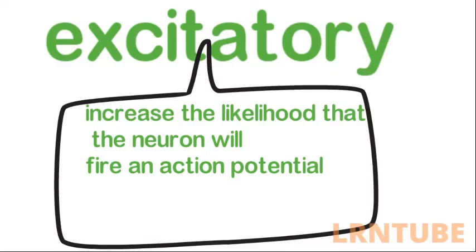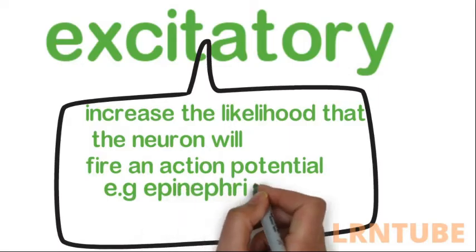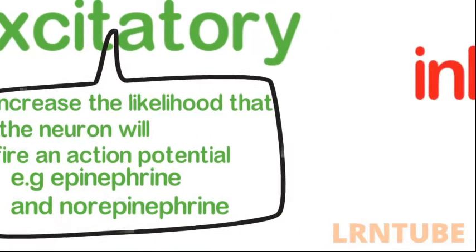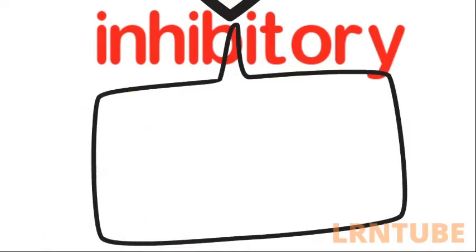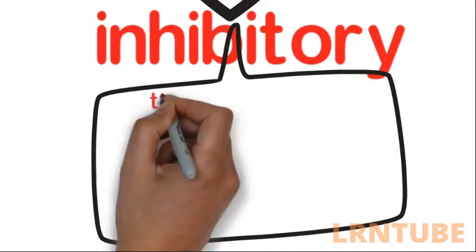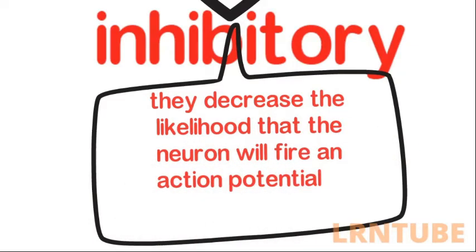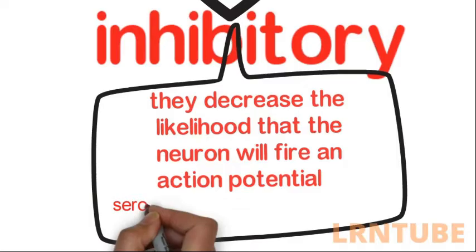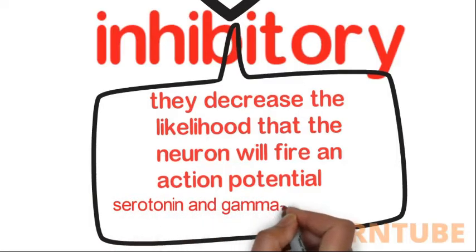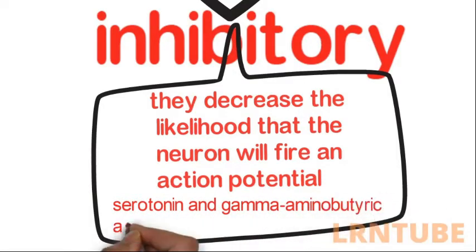Some major examples of excitatory neurotransmitters include epinephrine and norepinephrine. Inhibitory neurotransmitters have inhibitory effects on the neuron — they decrease the likelihood that the neuron will fire an action potential, basically decreasing the chances of a target cell taking action. Some examples include serotonin and GABA, or gamma-aminobutyric acid.